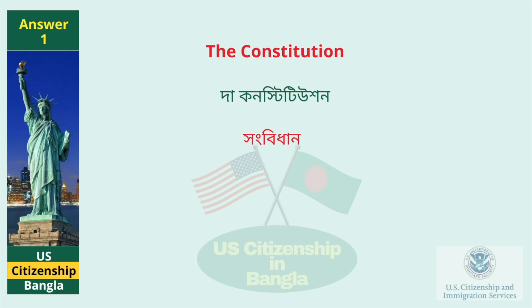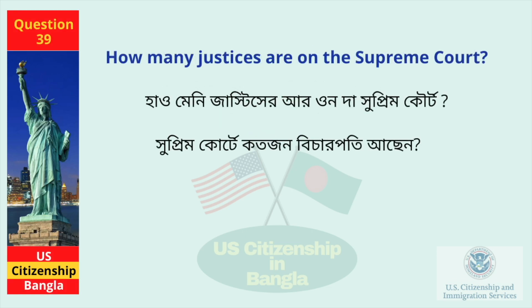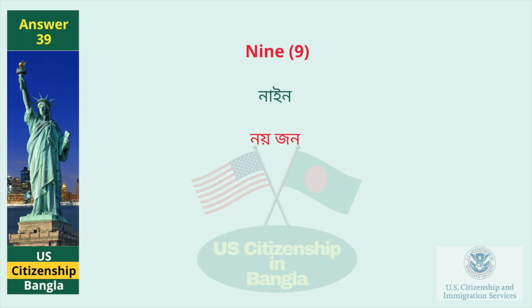What is the Supreme Law of the Land? The Constitution. How many Justices are on the Supreme Court? Nine.